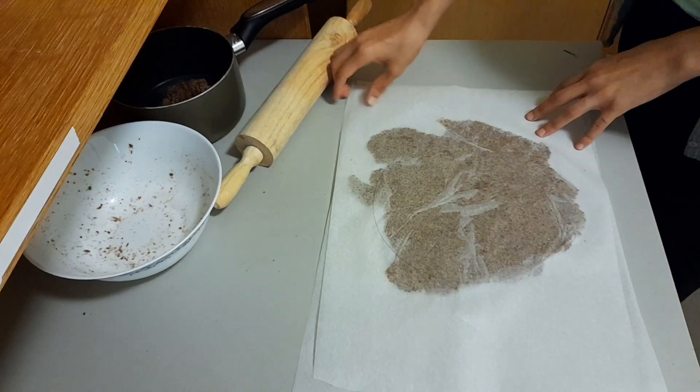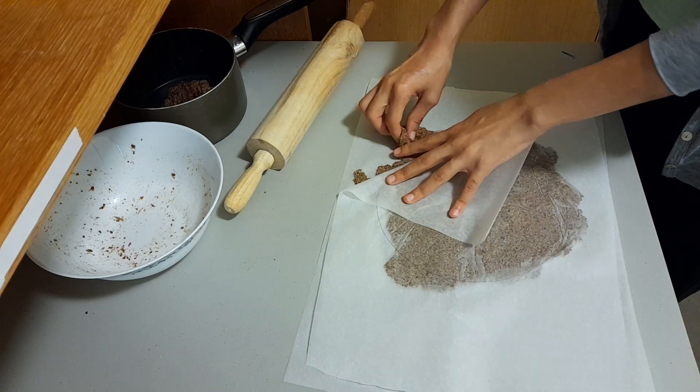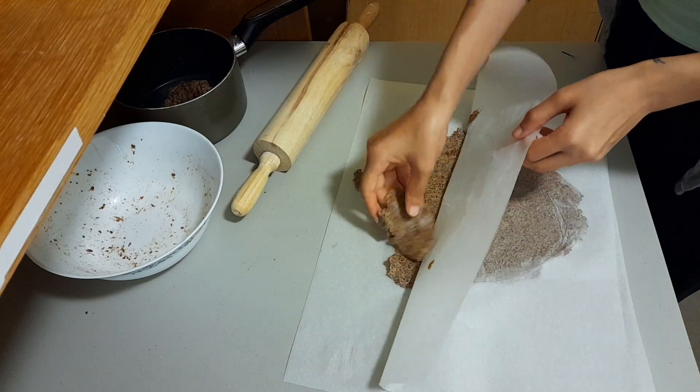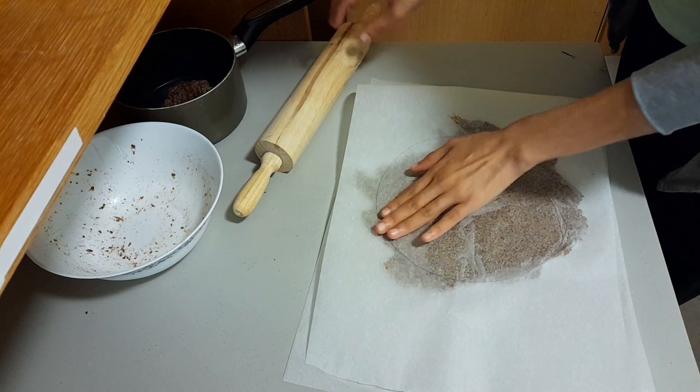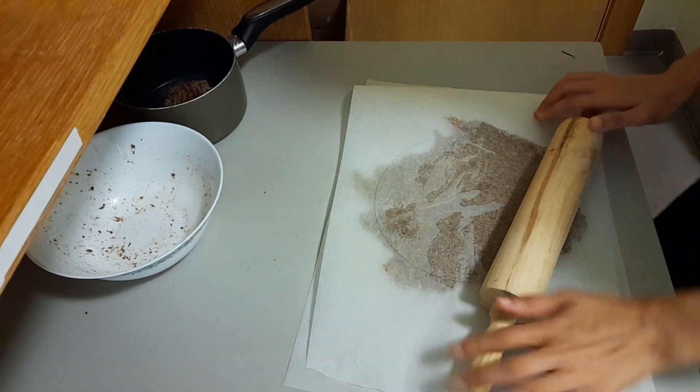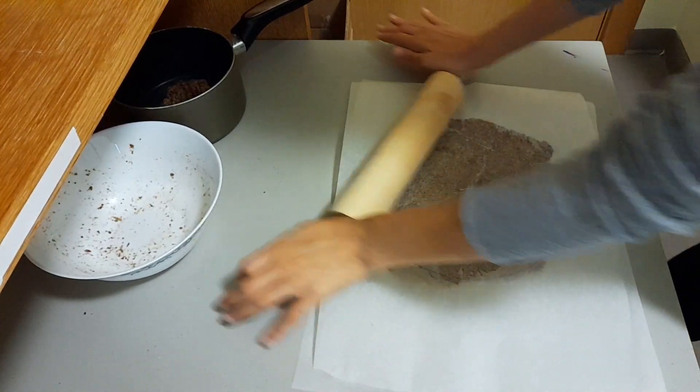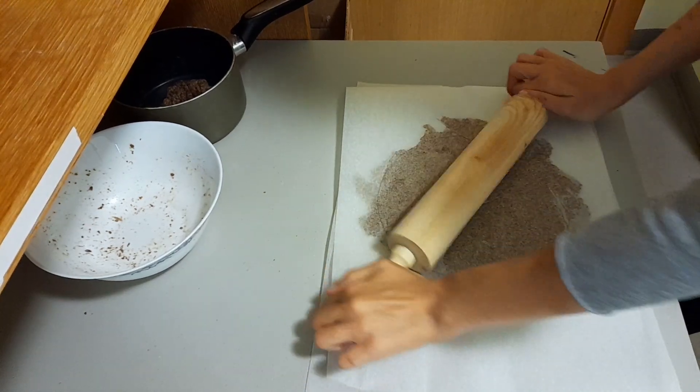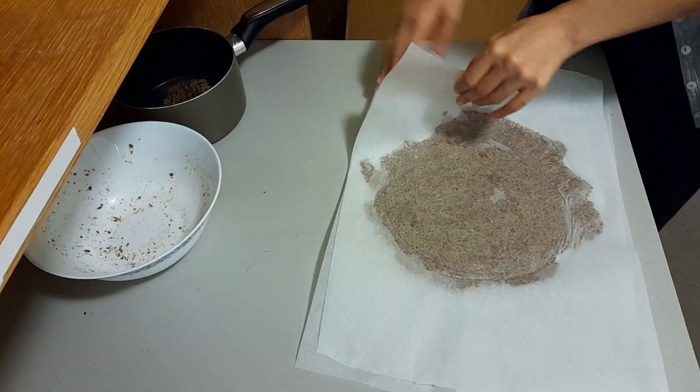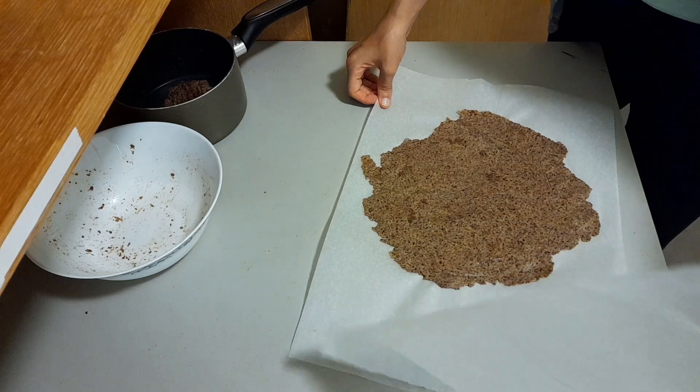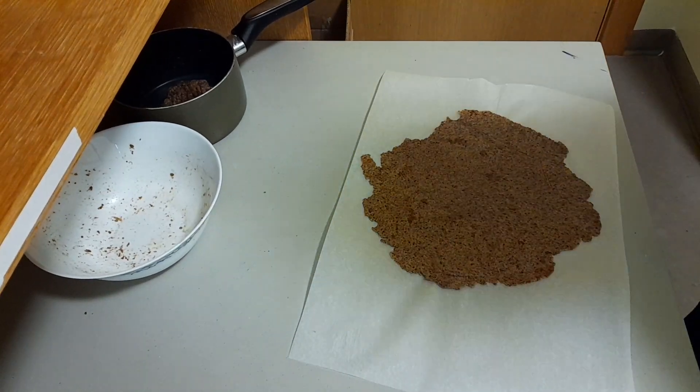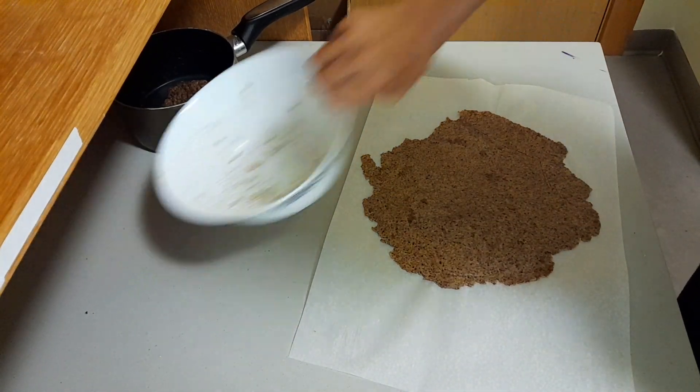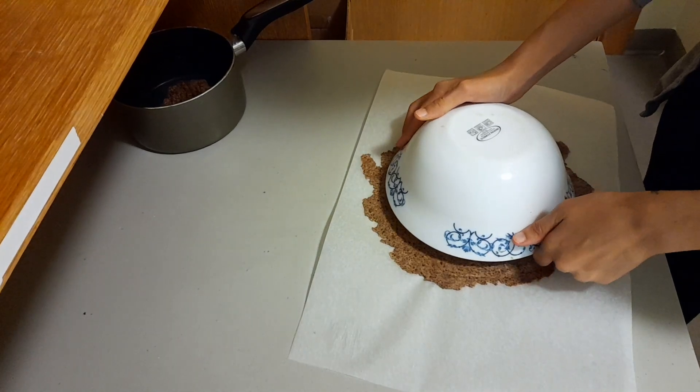Now if your dough is giving you some problems, just remove the upper parchment paper and move around some of the pieces of the dough like this. Put them to where you want them to be so you can achieve your desired size or shape, and then put the upper parchment paper back on top of the dough and roll it out again. When you're done, take off the upper parchment and use a bowl to cut off the excess pieces of the dough. You can use those pieces to form another flatbread.